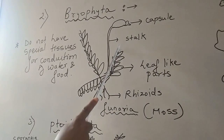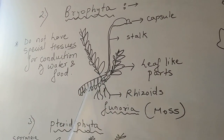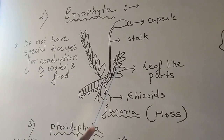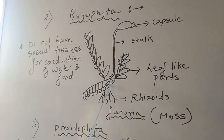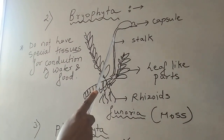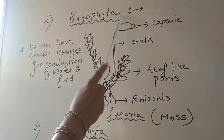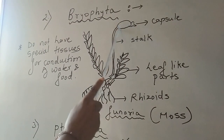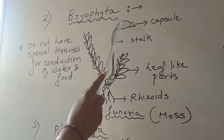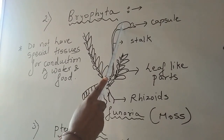Here also, you can see a leaf-like structure, but these are not the true leaves. These are called leaf appendages. And at the top, you can see the stalk and the last part, which is called the capsule. This capsule contains spores during favourable conditions.